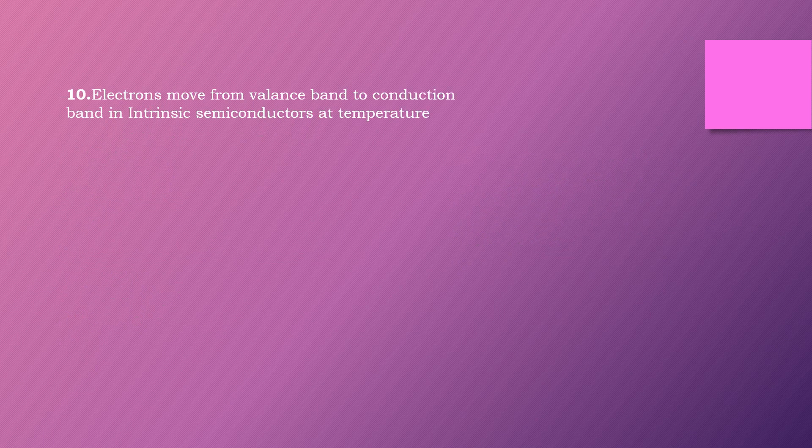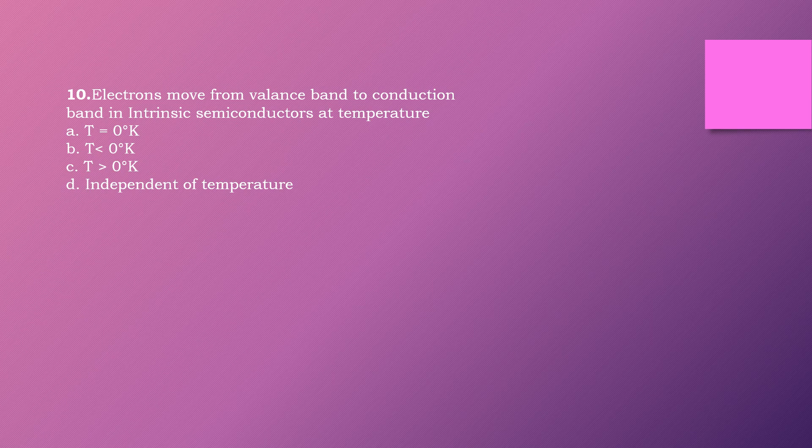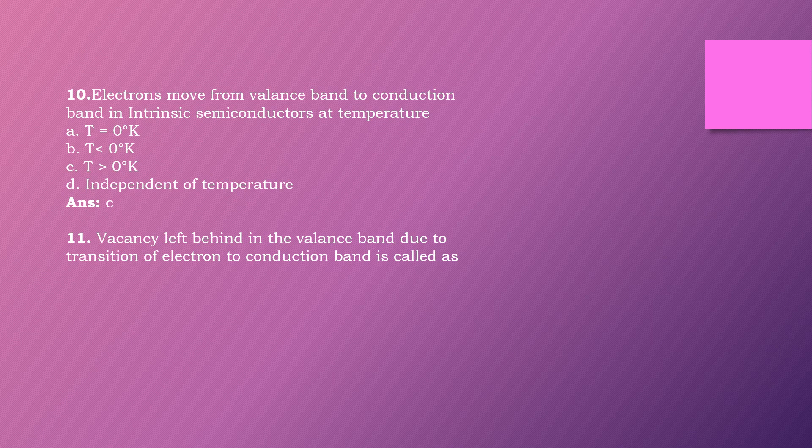Question ten: Electrons move from valence band to conduction band in an intrinsic semiconductor at which temperature? Options are: temperature equal to zero, temperature less than zero, temperature greater than zero, independent of temperature. The right answer is option C: temperature greater than zero.